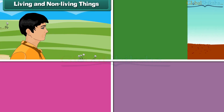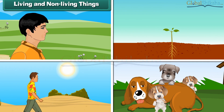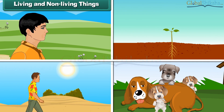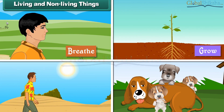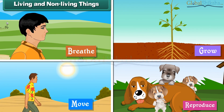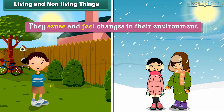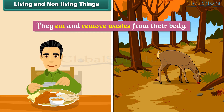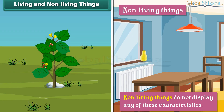Living and non-living things. Living things display the following characteristics: they breathe, they grow, they move, they reproduce, they sense and feel changes in their environment, and they eat and remove wastes from their body. Non-living things do not display any of these characteristics.